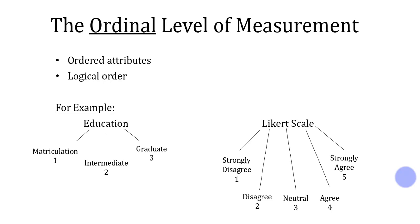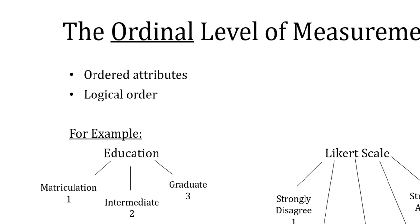The second level of measurement is ordinal. Now here, we have to follow some order. We have to follow some logical order. It has ordered attributes. For example, education. So in this case, as you can see, I have used three different options: matriculation, intermediate, graduate.